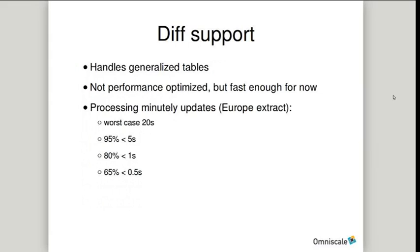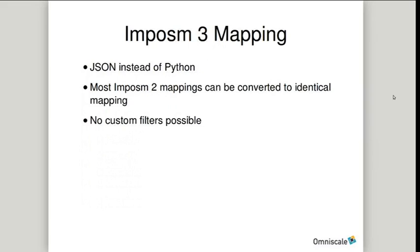The diff import is not performance-optimized yet, but it's fast enough. Based on data from about one month of importing Europe diffs and minutely diffs, most are imported in a few hundred milliseconds, with a worst case of 20 seconds — which can happen when larger geometries like country boundaries change. We changed the mapping to JSON format since we no longer use Python. You can convert most Impossum 2 mappings to an identical mapping for Impossum 3, though custom filters are not yet supported.